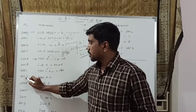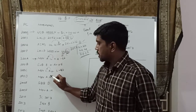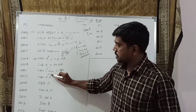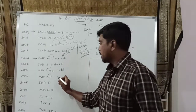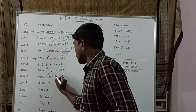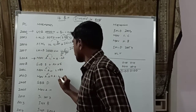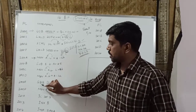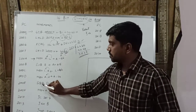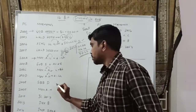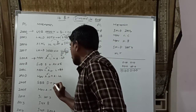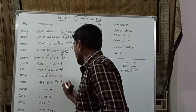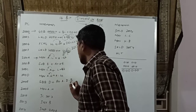The next memory location is 200CH. Here, the H content is transferred to A register — MOV A, H. Whatever value is present in H, the content is transferred to A. After execution of this instruction, A value is 44H. Then the next instruction is SBB D — subtract with borrow. After execution, the result is A minus D minus borrow.